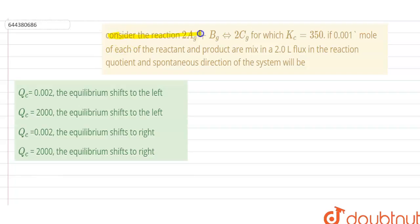Hello, so our question is: consider the reaction in which 2 mole of A reacts with 1 mole of B gives the formation of 2C at equilibrium.